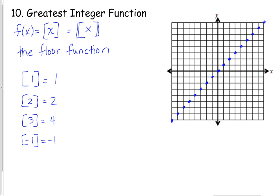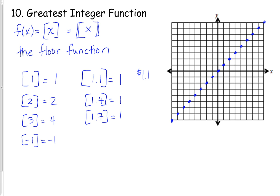The difference comes when I get in between these points. The greatest integer of 1.1 is 1. The greatest integer of 1.4 is also 1. The greatest integer of 1.7 is also 1. I think of it like dollars — if you had $1.10, how many bills would you need? You'd need $1. $1.40 is a $1 bill. $1.70 is also a $1 bill.